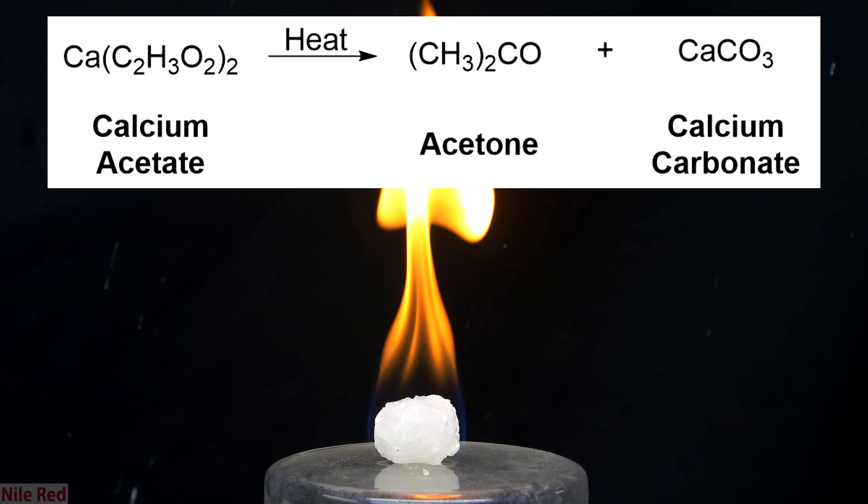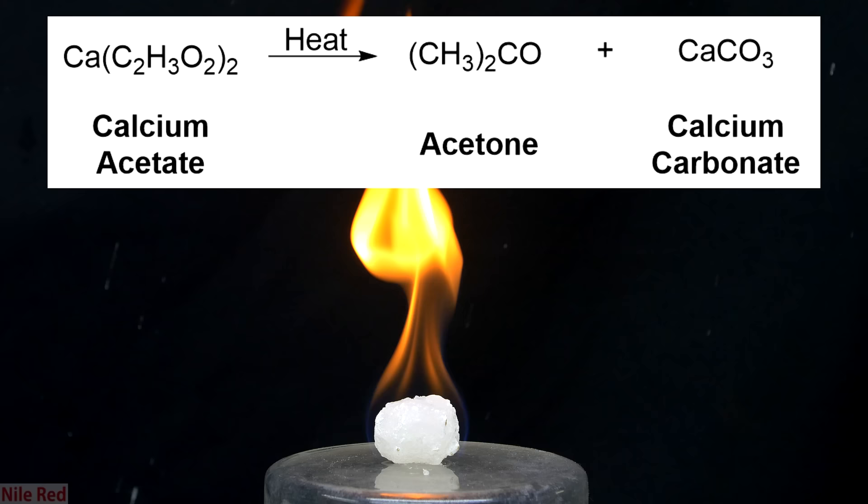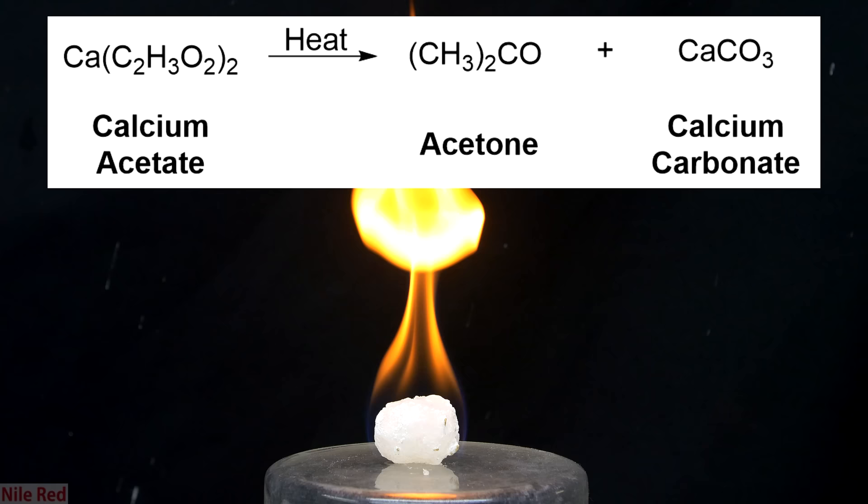The heat of the fire will also cause some of the calcium acetate to break down into calcium carbonate and acetone. The calcium carbonate is effectively just chalk, and it's not going to really do much once it's formed, but the acetone is flammable, and it will contribute to the fire.